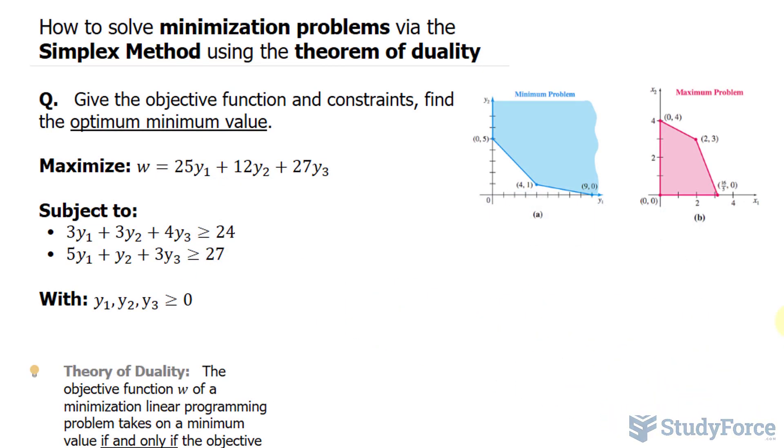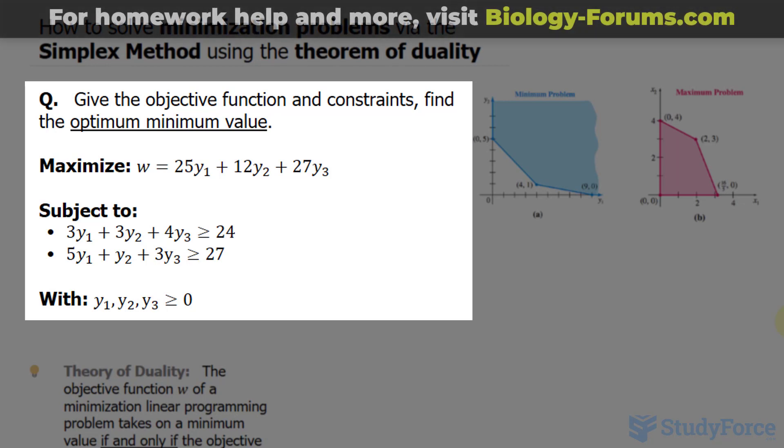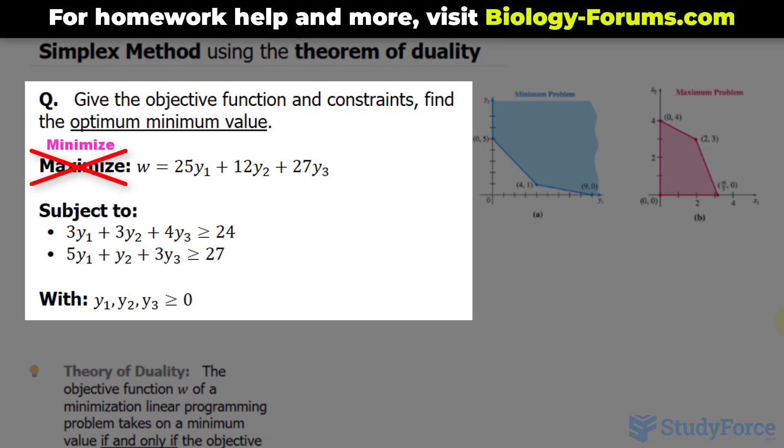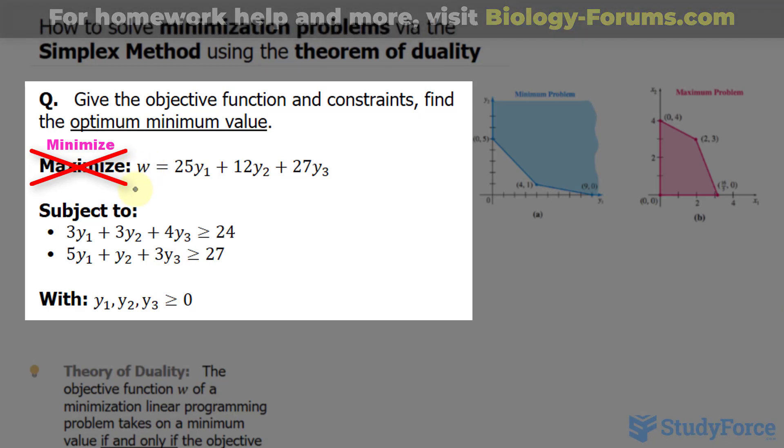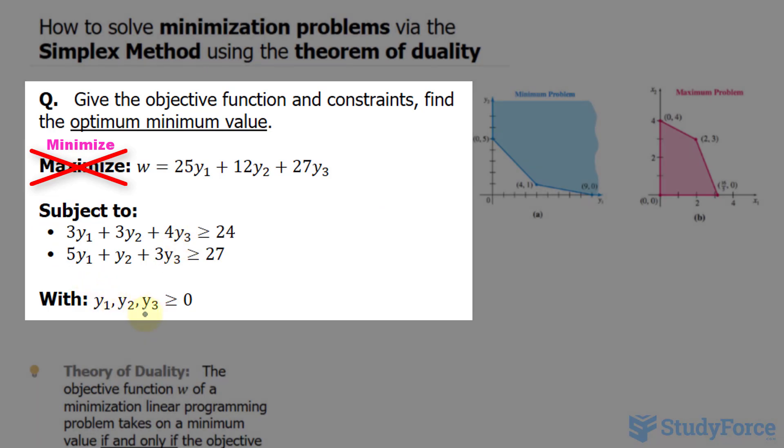In this quick tutorial, I'll show you how to solve minimization problems via the simplex method using the theorem of duality. The question reads: given the objective function and constraints, find the optimal minimum value. Notice that they've given us our objective function where w equals the expression on the right. They've also given us the constraints, and y₁ to y₃ need to be positive.